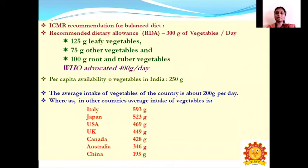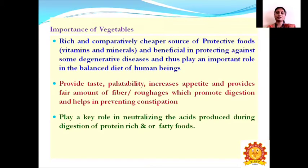In comparison, the average intake of vegetables in other countries is: Italy 5.93g, Japan 5.23g, USA 4.69g, Turkey 4.49g, and China 1.95g.